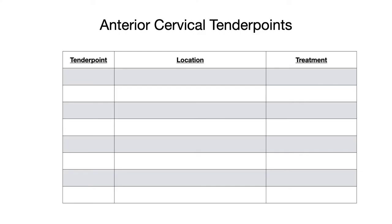So let's get started with the anterior cervical tender points. Tender point AC1, which stands for anterior cervical 1, is located on the posterior edge of the ramus of the mandible, and the treatment for counter strain to this tender point is rotation away, or RA.